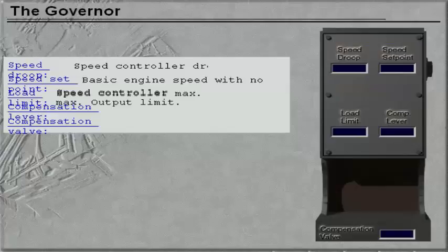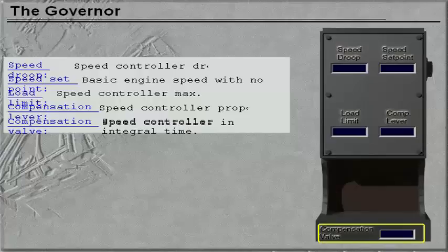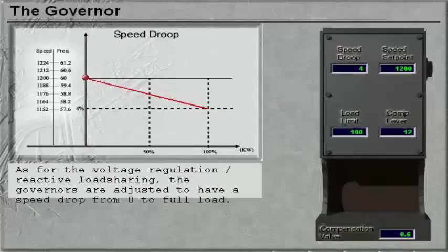For reactive load sharing, the Governors are adjusted to have a speed drop from zero to full load.